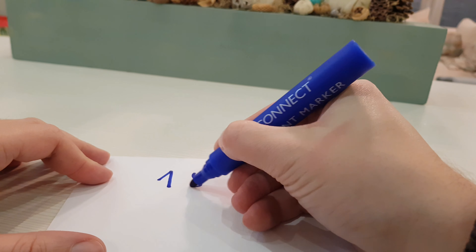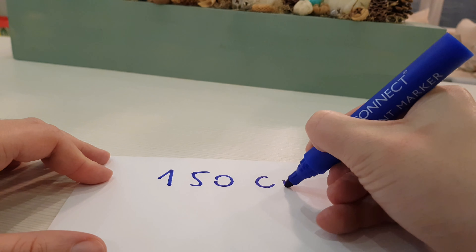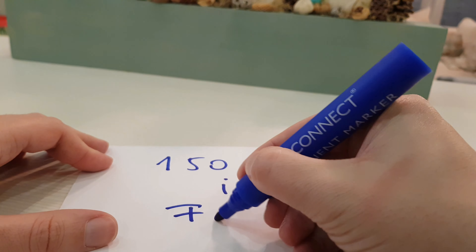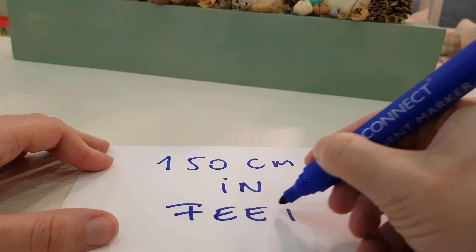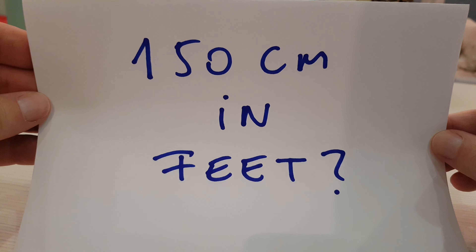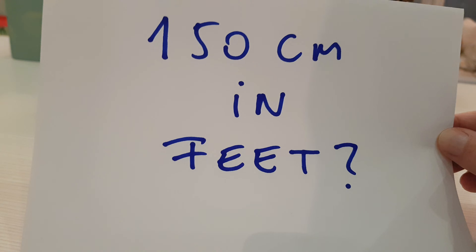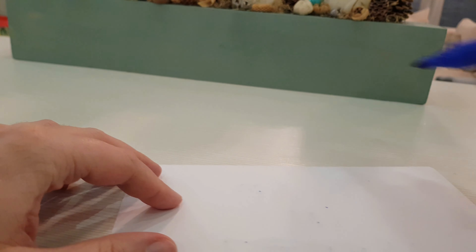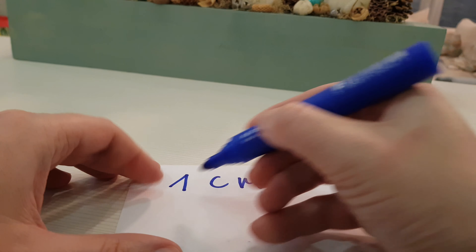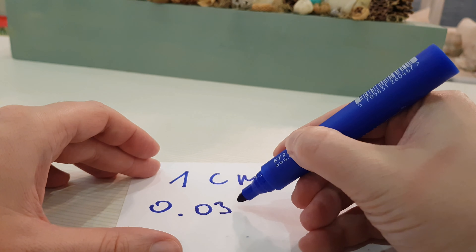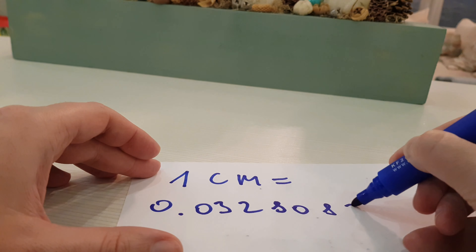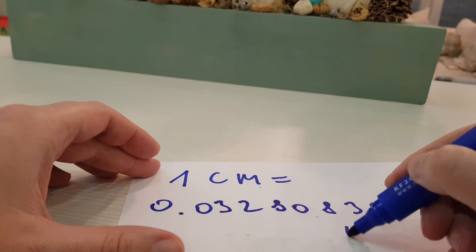In this video I will show you how to convert 150 cm to feet. Here is the formula: 1 cm equals 0.032808399 feet.